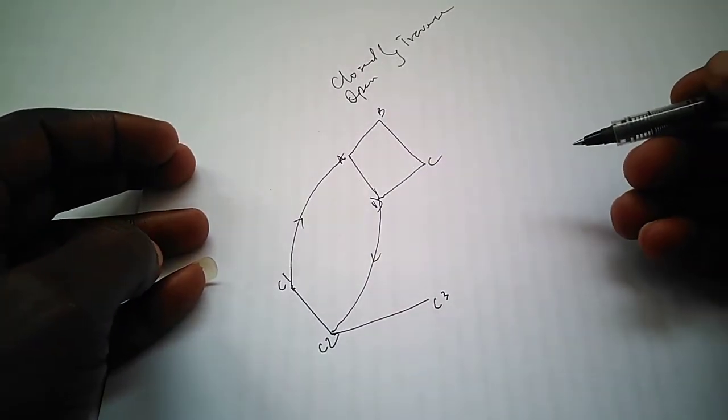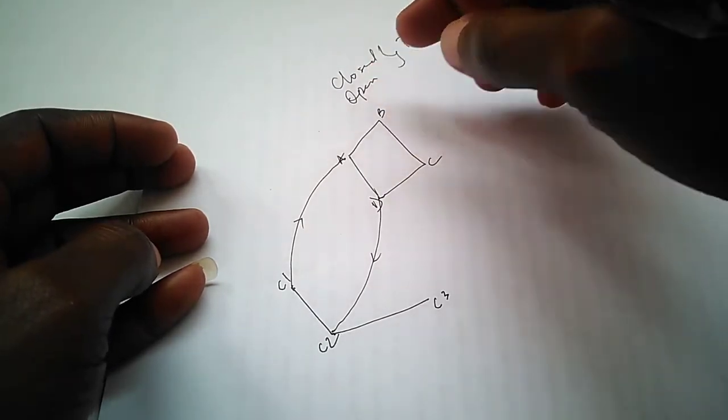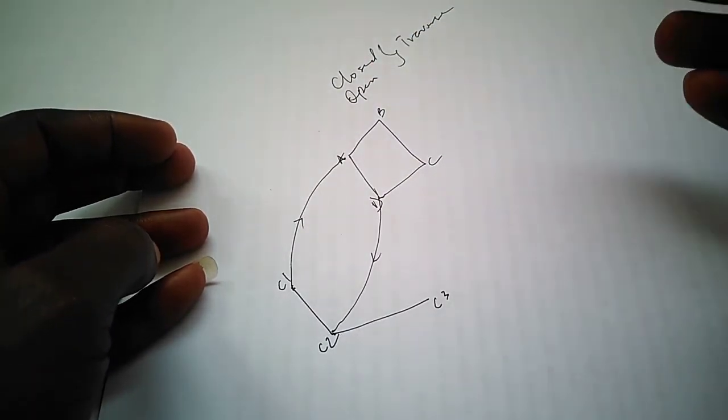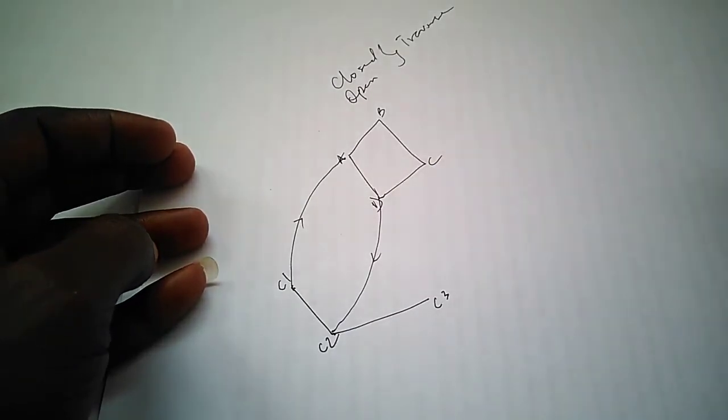What is an open traverse? An open traverse is a traverse that starts from a known point but does not close on a known point.